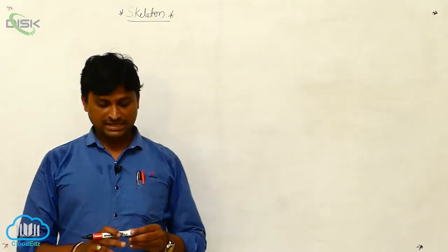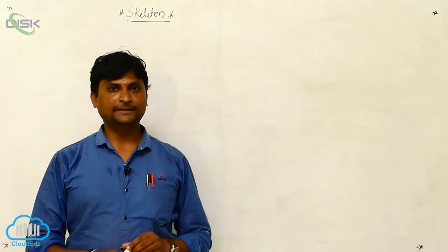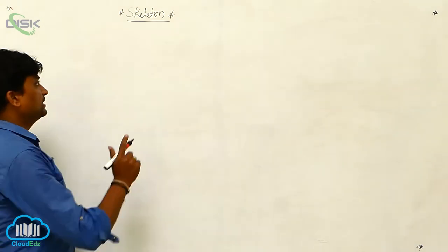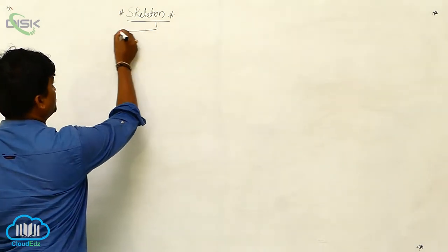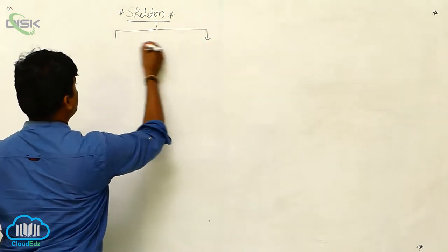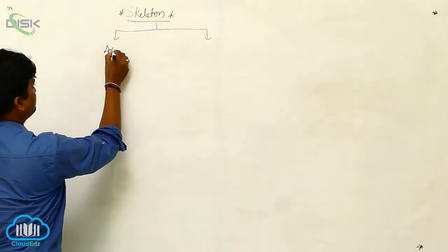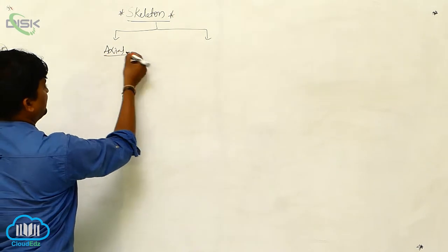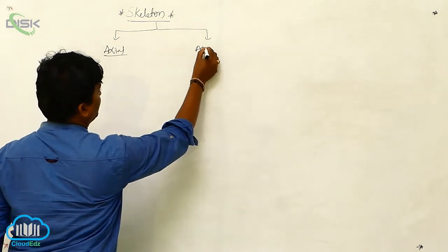The skeleton is basically classified into two: one is the axial skeletal system and the appendicular skeletal system.